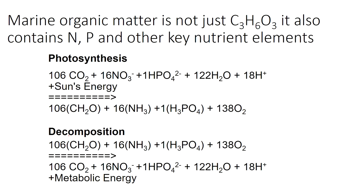We can include these other elements in our summary of photosynthesis. So that simplified CO2 + water → oxygen + sugar can now bring in some other important elements that have become important in understanding what might be limiting these processes in parts of the ocean. So now photosynthesis not only requires CO2 and lots of it, but it also needs nitrate and phosphate and the sun's energy to produce organic matter that includes organic carbon, organic nitrogen, and organic phosphorus.